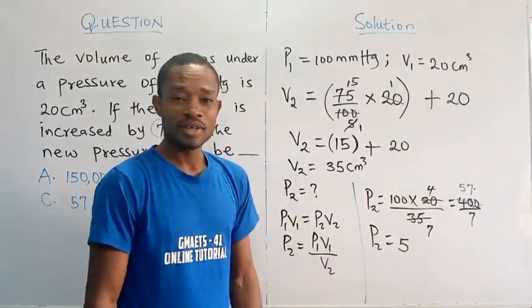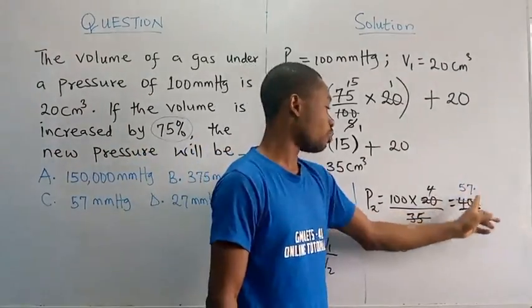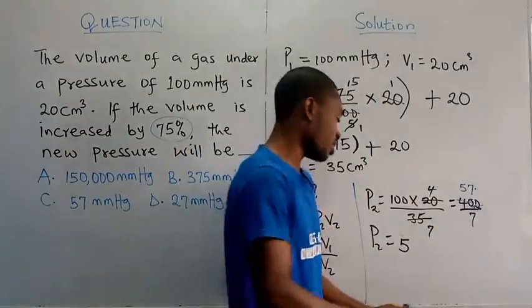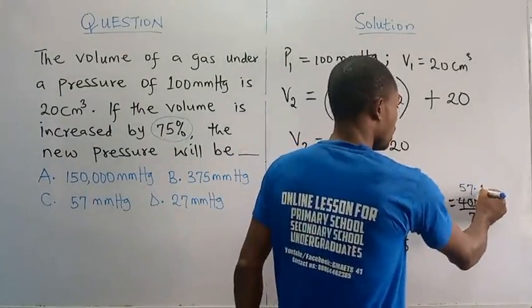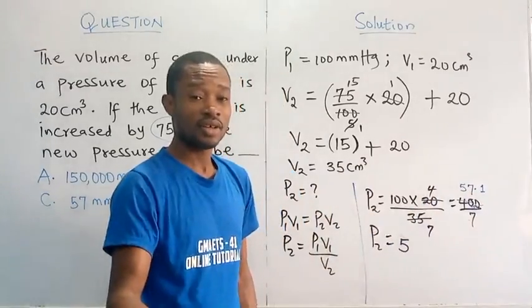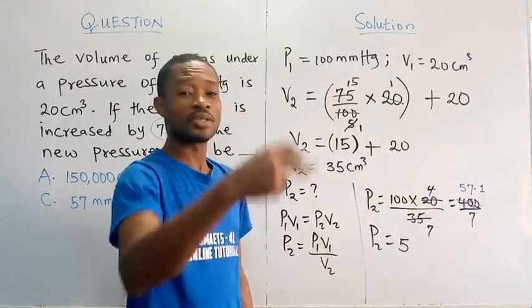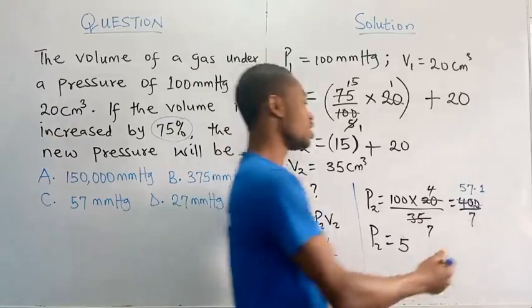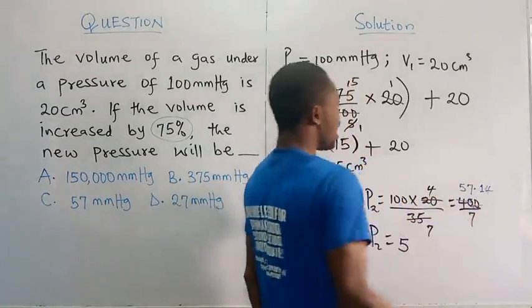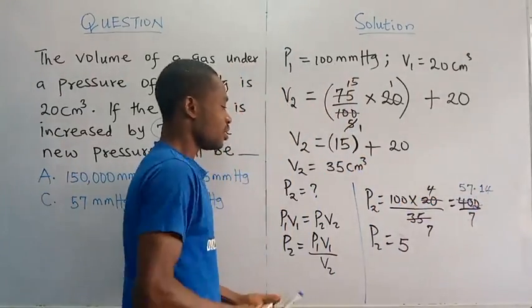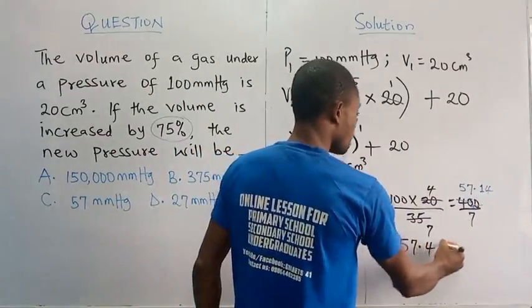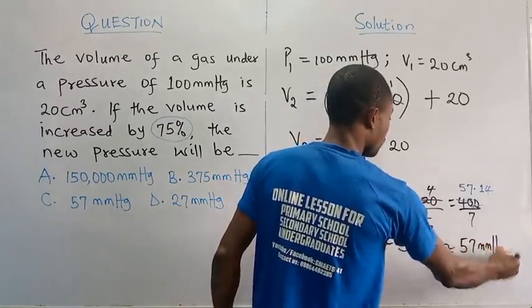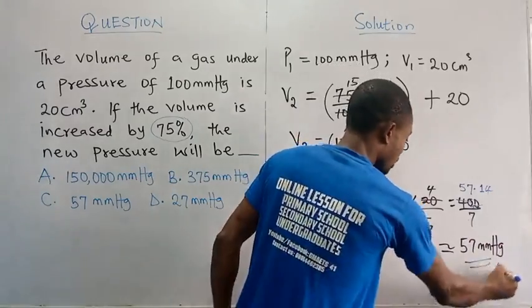I can write 57 whole number 1 over 7. But I want to get it in decimal. So what I'm going to do is 57 point. That remainder 1, attach 0 to it, you get 10. Divide by 7. 7 can go into 10 just 1 time. 1 time remainder 3. Attach 0 to the 3, you get 30. 7 can go into 30 how many times? That should be 4 times. So this is actually 1.4, and we are done with this. The new pressure will be 57.14, which is approximately equal to 57 millimeter of mercury. And this is our answer.